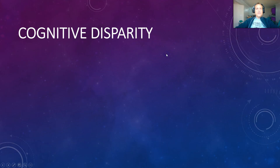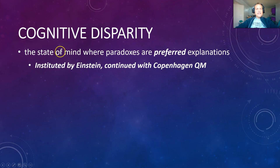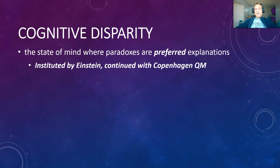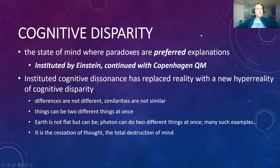So, dispensing with cognitive disparity. Just to review: what is cognitive disparity? That is the state of mind where paradoxes have become preferred explanations of phenomena in reality — anything. People just prefer paradoxes. This was begun and instituted by Einstein, where he said in the simultaneity paradox that photons can do two different things at the same time. And then this was continued directly with the Copenhagen quantum mechanics interpretation, where things like cats can be two different things or an infinite number of different things at the same time.